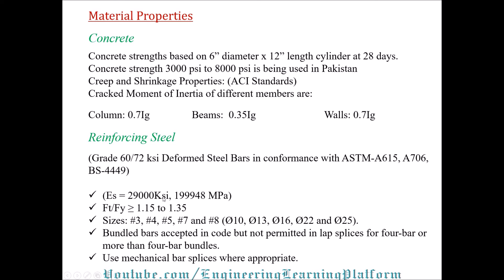The ratio ft/fr should be greater than or equal to 1.15 to 1.35. Common bar sizes used are No. 3 (3/8 inch diameter), No. 4, No. 5, No. 7, and No. 8 — the latter being a 1-inch diameter bar. Similarly, millimeter or MKS system sizes are used. Bundle bars are accepted in the code but not permitted in lap splices for bundles of four or more bars, as they prevent proper concrete bonding. Use mechanical bar splices where appropriate.